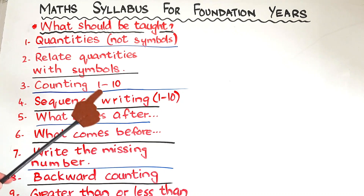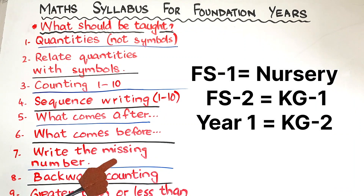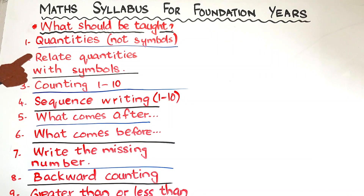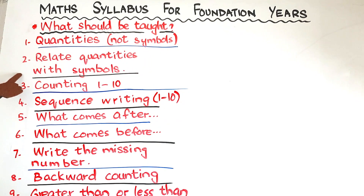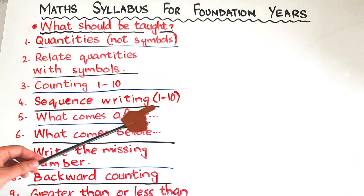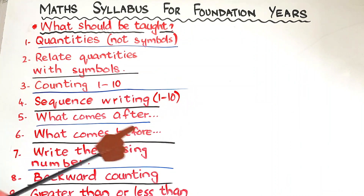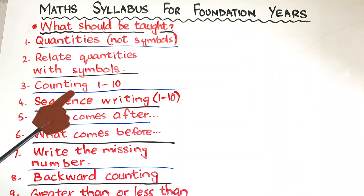Here is a list of contents you need to teach your kids when they are in FS2. You can even begin in nursery, but in nursery you just simply introduce some numbers. This is a proper syllabus beginning from KG1, or FS2 — they are the same thing. Topics include: quantities not symbols, relating quantities with symbols, counting 1 to 10 orally, sequence writing 1 to 10, what comes after, what comes before, writing missing numbers, backward counting, and greater than or less than.